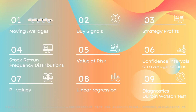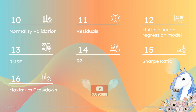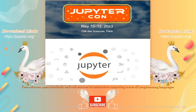You are going to learn how to calculate moving averages, buy signal based on MA, strategy profit, stock return frequency distributions, value at risk, confidence intervals on average returns, hypothesis tests, key values, linear regression, diagnostics like the Durbin-Watson test, normality validation, and residuals. You will apply a multiple linear regression model to predict the daily return of SPY based on other stock prices, and you will evaluate the model using RMSE, R², Sharpe ratio, and maximum drawdown.